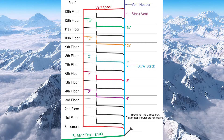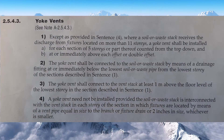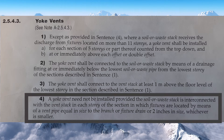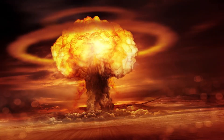Now, I did skip the last yoke vent clause from 2543 in the last video. Let's go through it right now. Clause 2543 part 4: a yoke vent need not be installed provided the soil away stack is interconnected with the vent stack in each story of the section in which fixtures are located by means of a vent pipe equal in size to the branch or fixture drain or two inches in size, whichever is smaller. Now, if you're completely baffled by that, well, so am I, but I know how to explain this in an easier way.